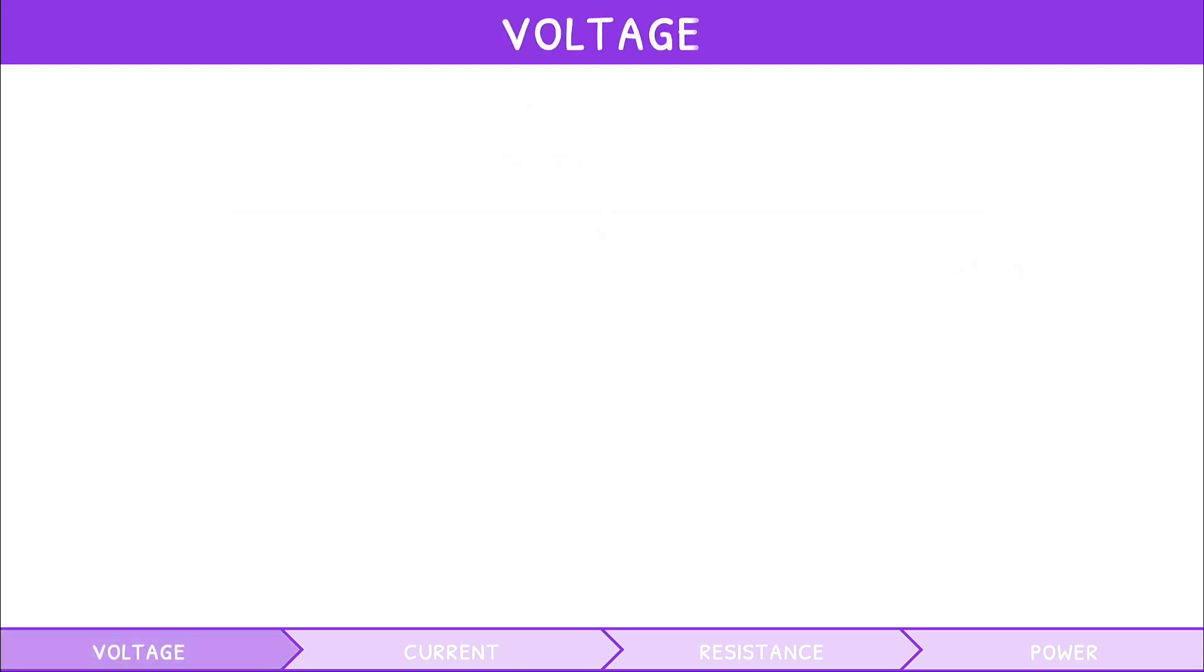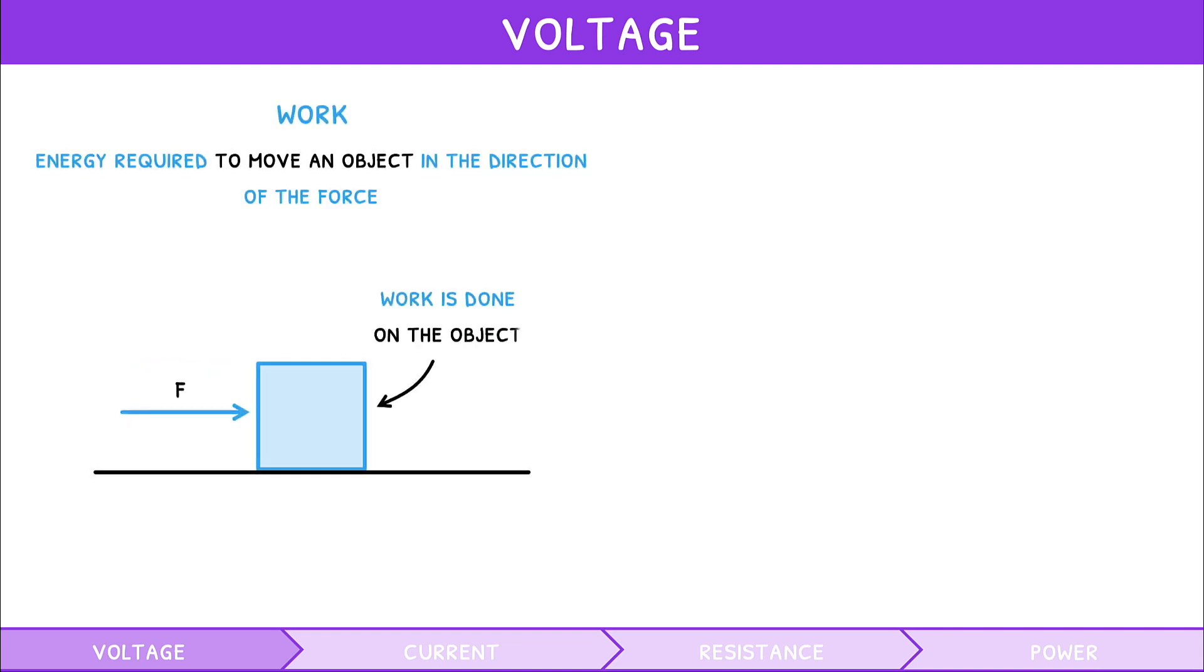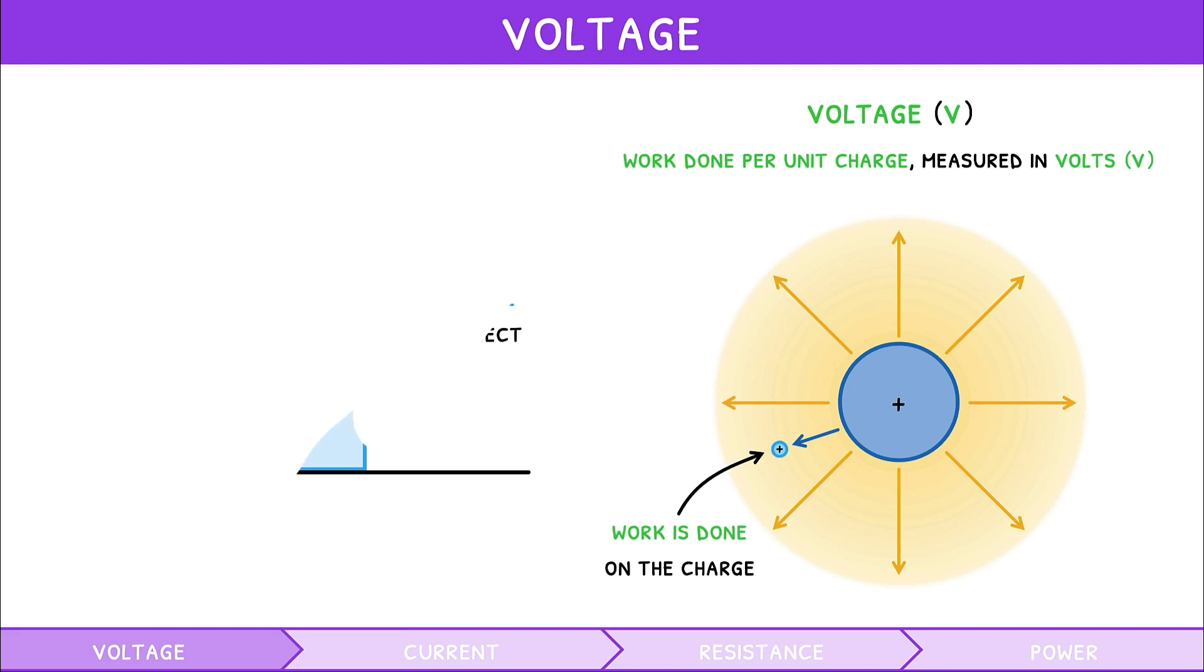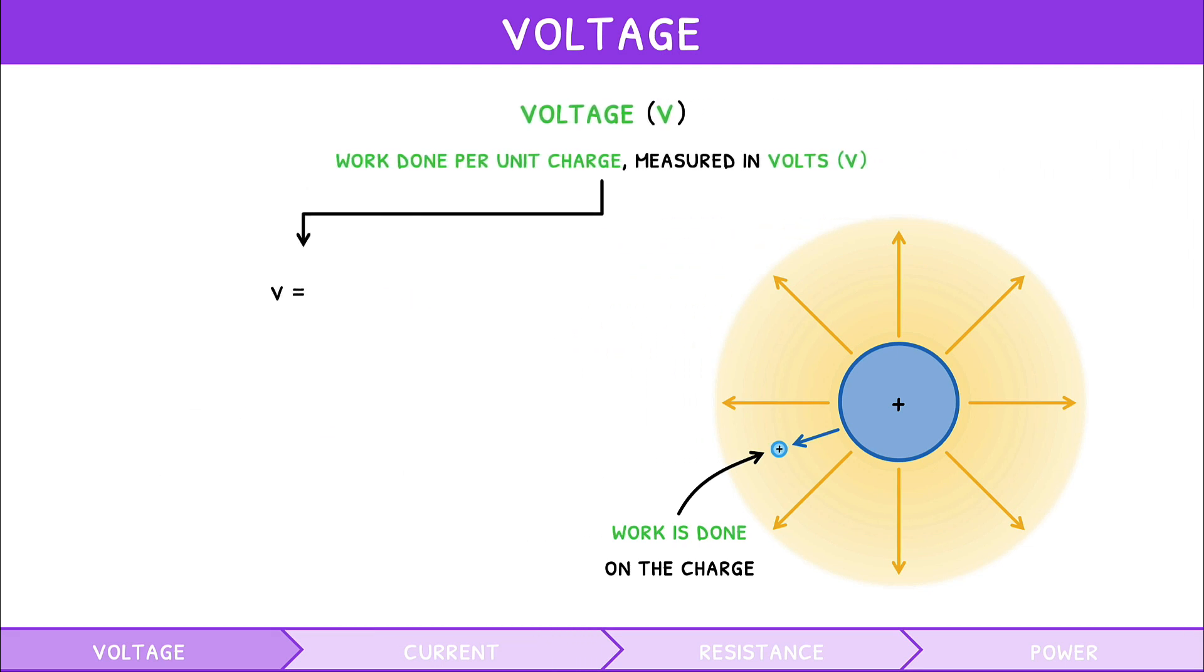Let's start by looking at voltage. Remember from our fourth Topic 2 video that when an object moves in the direction of an applied force, work is being done on the object. So if a test charge in an electric field moves in the direction of the exerted electrostatic force, work is done on the charge. This is the voltage V, officially defined as the work done per unit charge, and measured in volts. The formula for this is voltage equals work divided by charge.